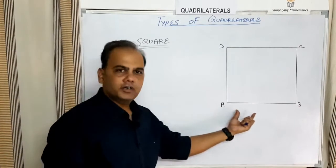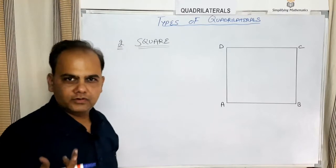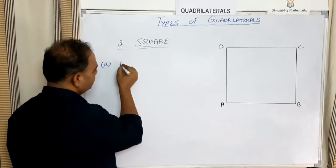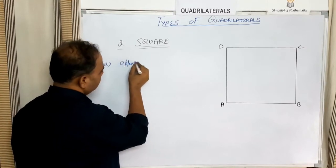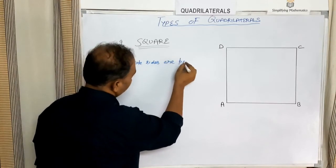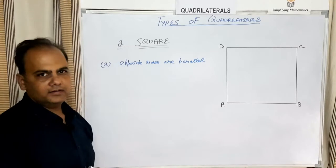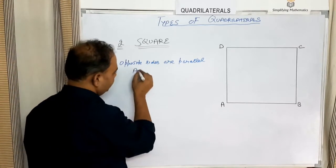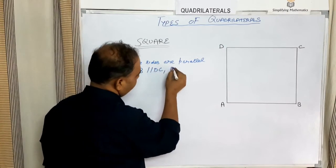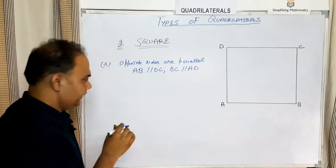The second type of quadrilateral is a square. Consider a quadrilateral ABCD. This quadrilateral will be called a square based on certain properties. The first property is that the opposite sides are parallel — AB is parallel to DC, and BC is parallel to AD.